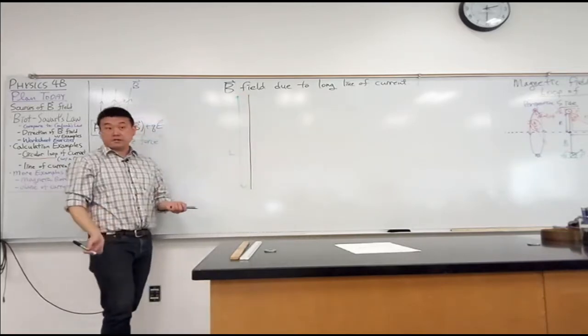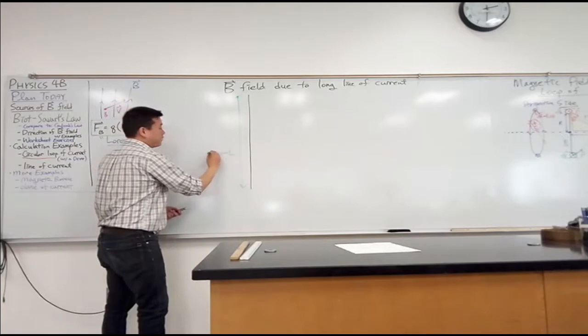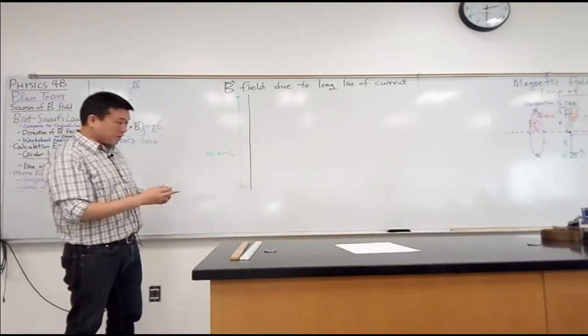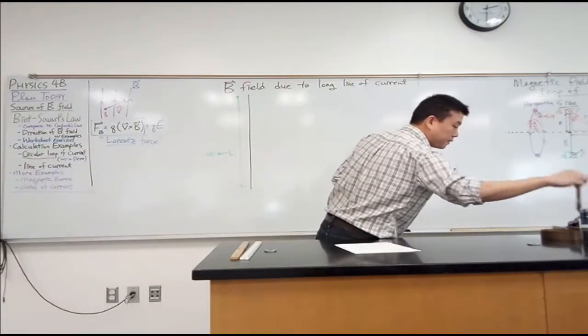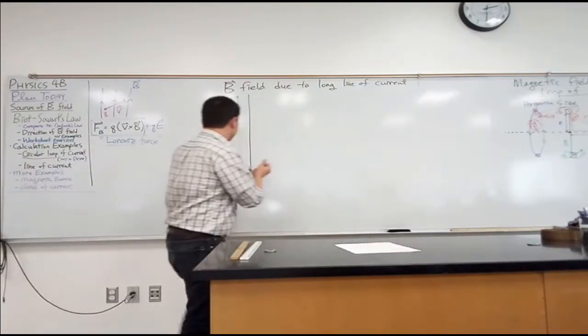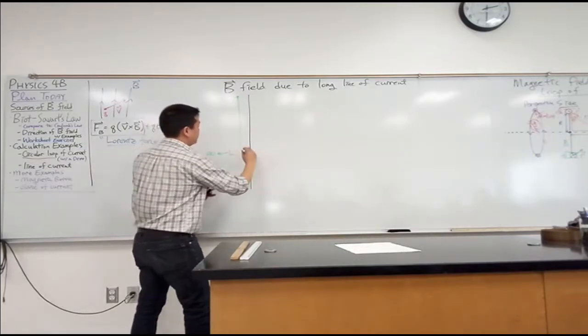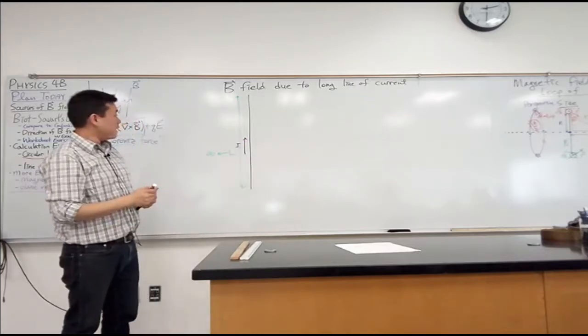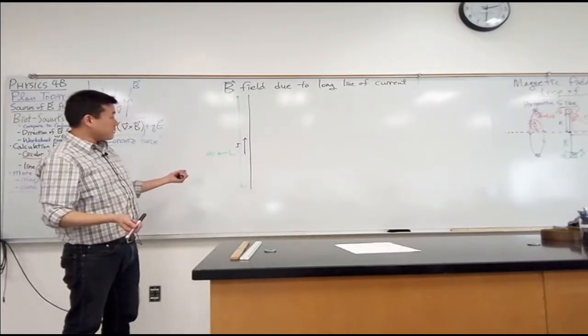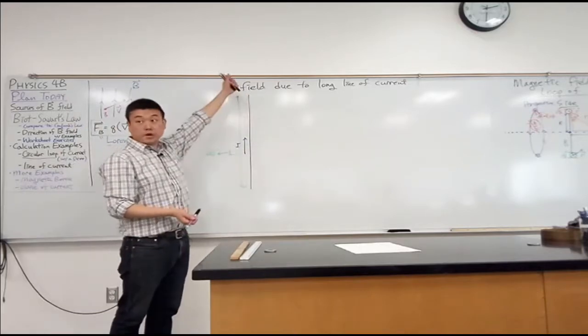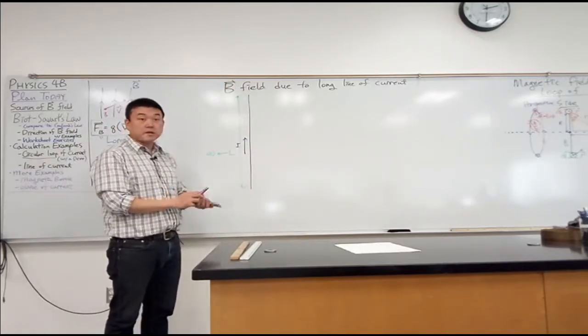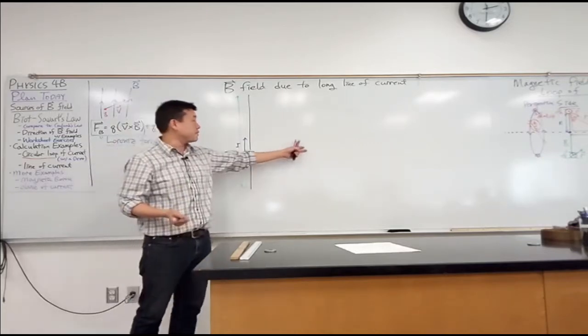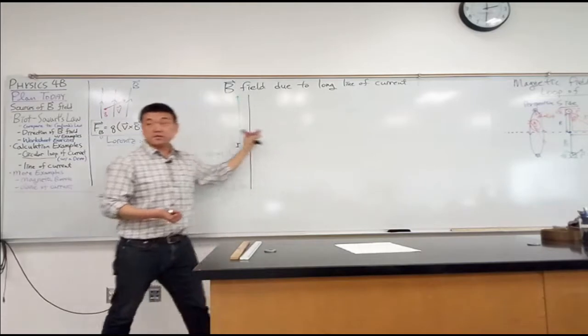What I'm going to do later in the calculation is let L go to infinity to say it's an infinitely long wire. It's going to be carrying current I pointing up. I'm interested in the magnetic field due to this line of current at a particular point in space.